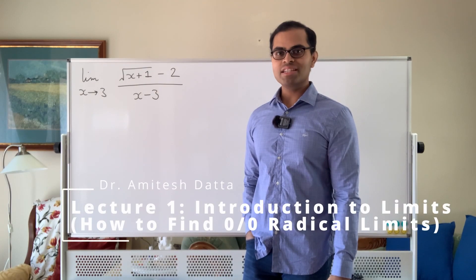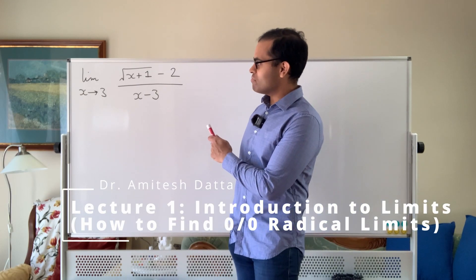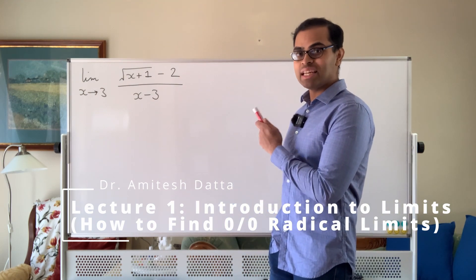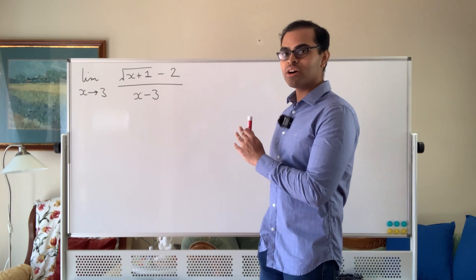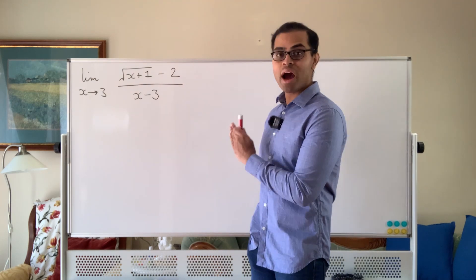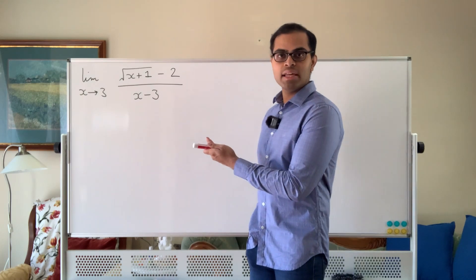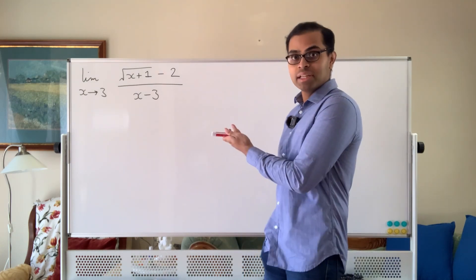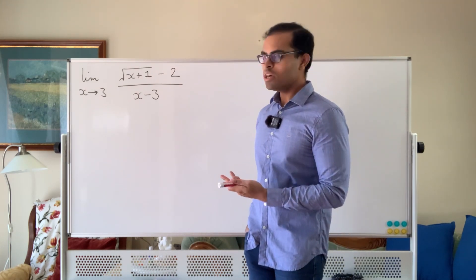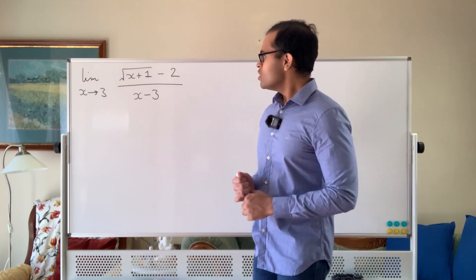Hi everyone, my name is Amitesh and in this video we're going to master a limit that involves a square root. It's going to be a zero over zero limit, so it's an indeterminate form. We're going to talk through the step-by-step process to master these kinds of limits involving one simple trick. This is a limit that's appeared multiple times in exams at Princeton University, so mastering this limit will be very important.